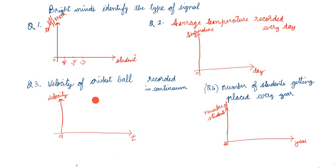Question 3: Velocity of a cricket ball recorded continuously — for all time as it hits the bat, travels, and is caught. Record the velocity throughout. Identify the type of signal, and if possible, draw a rough waveform. Question 4: Number of students getting placed every year in the department — for example, 40 in 2017, 45 in 2018, 35 in 2019, 17 in 2020. Identify the type of signal.